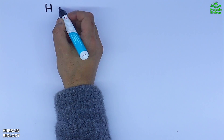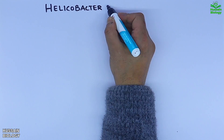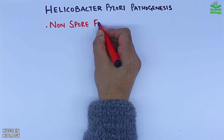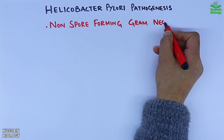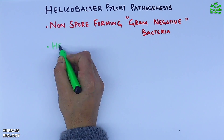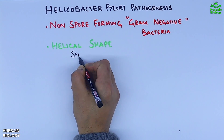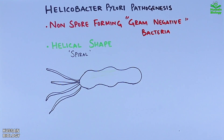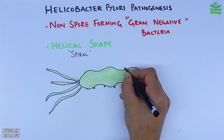In this video we will be discussing the Helicobacter pylori pathogenesis. It is a non-spore forming gram-negative bacteria which has a helical or spiral shape, as we can see in this diagram showing the spiral-shaped body.